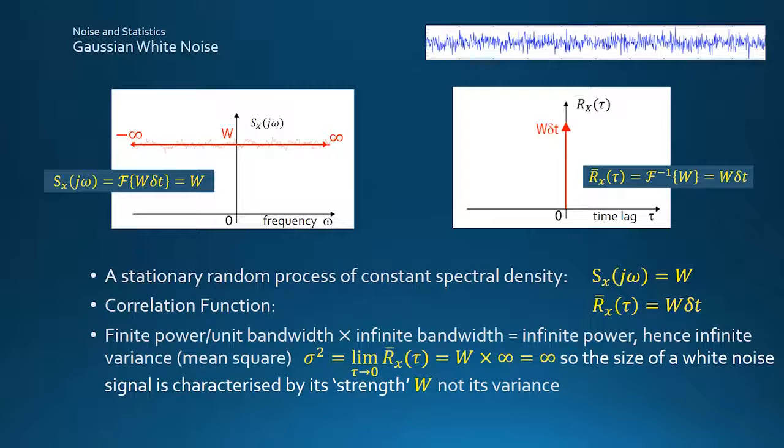This idealized response is convenient for simplifying many calculations, but unfortunately, the combination of an infinite frequency range and finite power per unit bandwidth adds up to infinite power, and infinite power adds up to infinite variance. These infinities make some of the other sums a bit tricky, and also make it necessary to characterize the size of a white noise signal by its strength rather than its variance.